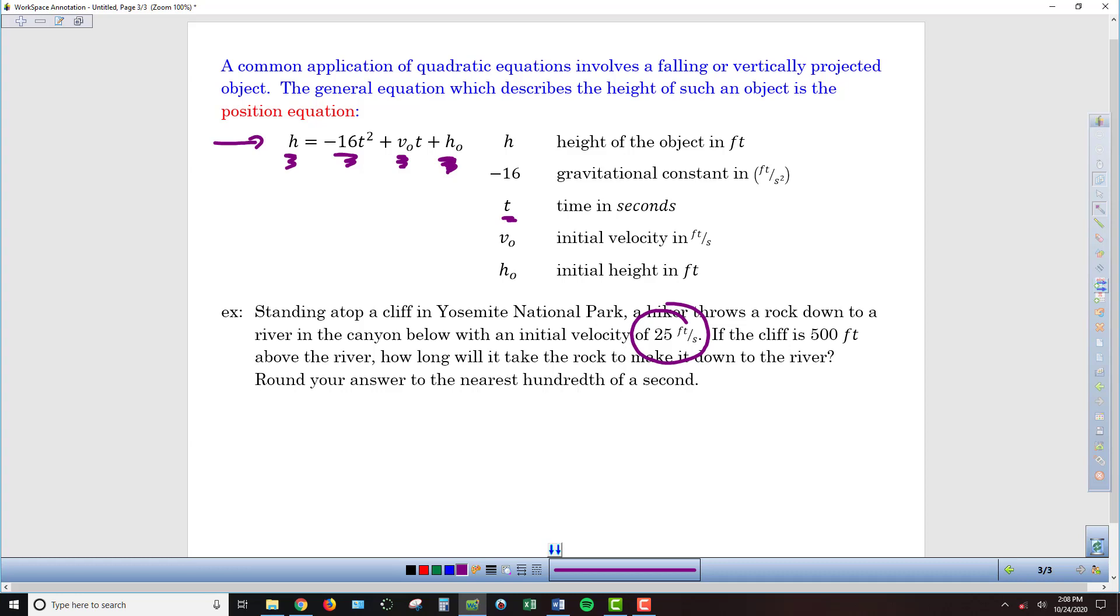So, since we're throwing that down, that's going to be our v sub zero, and it's going to be negative 25. If we were throwing it up, then it would be positive 25. And then it says that the cliff is 500 feet above the river. So, that represents our initial height. So, that's going to be our h sub zero in our equation, which is going to be 500 then.